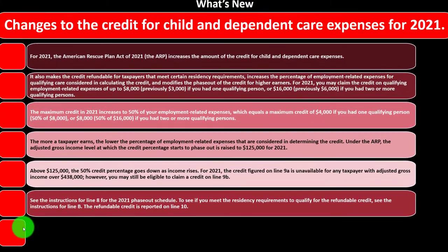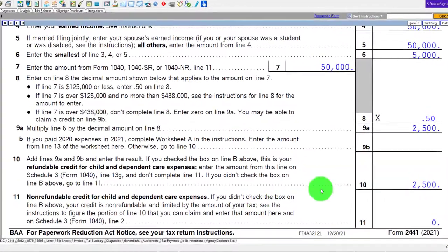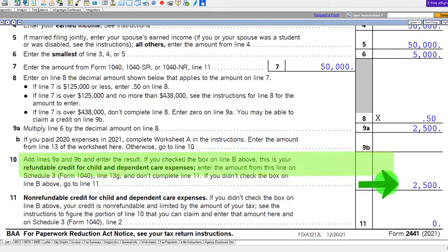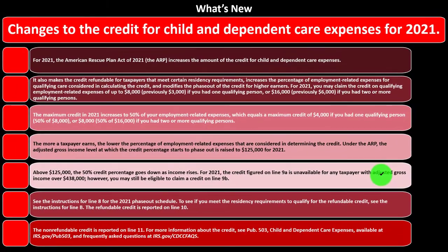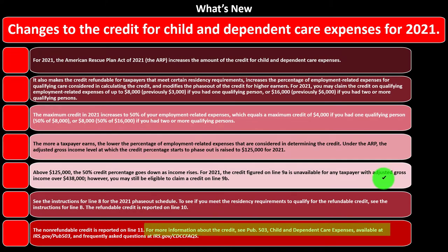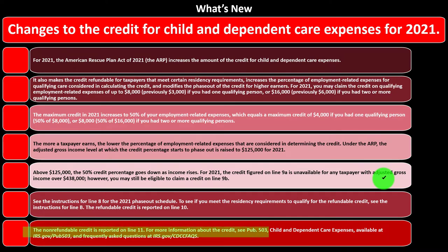The refundable credit is reported on line 10 — here is line 10 on the form. The non-refundable credit is reported on line 11. For more information about the credit, see Publication 503, Child and Dependent Care Expenses, available at irs.gov/pub503, and frequently asked questions at irs.gov.